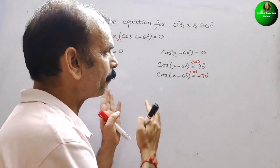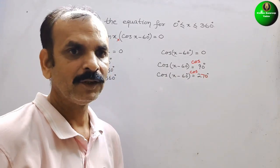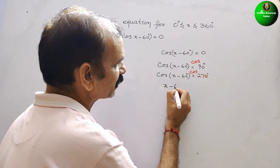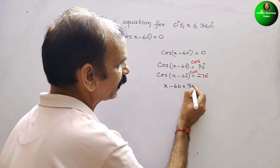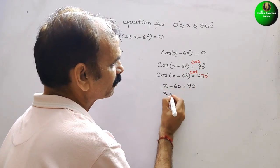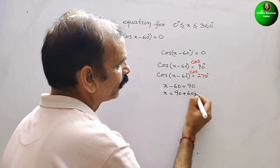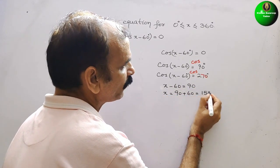Next, what we have to do? Just compare it. So we will get what? First one, we will get x - 60 = 90. So what is your x? x is 90 + 60, that is equal to 150 degree.